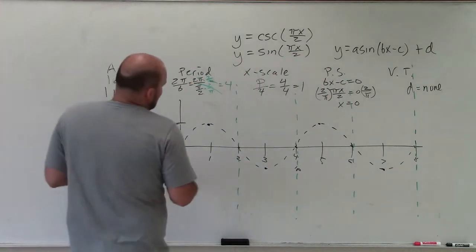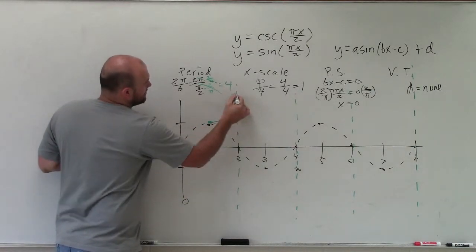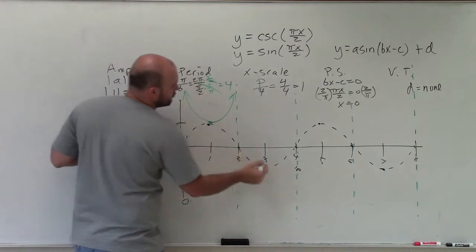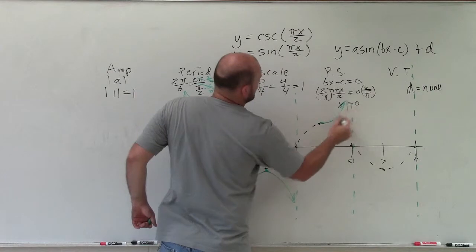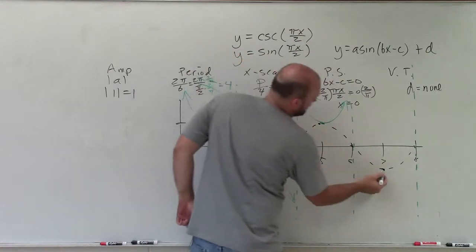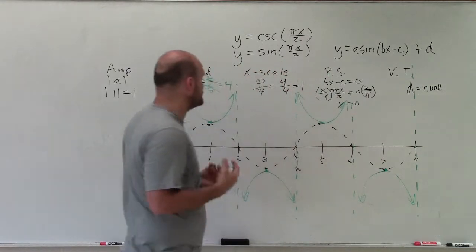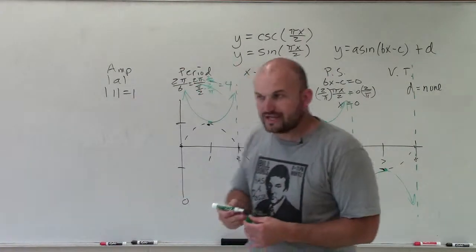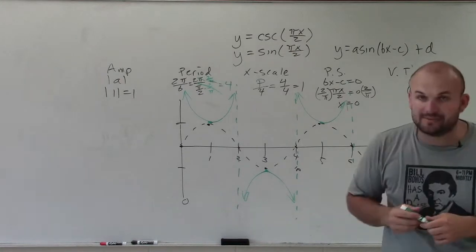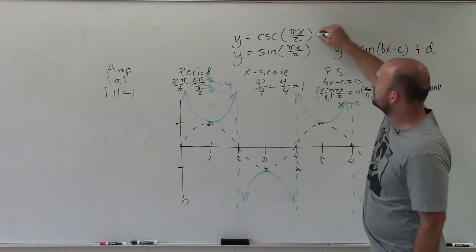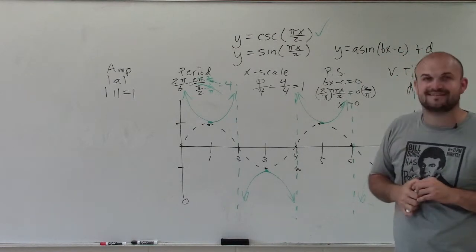To finish up the graph, cosecant actually shares a point with sine at the maximum and the minimum, but the cosecant graphs approach each asymptote. You can obviously use a table of values to get a much better graph, but this video is just about getting a general understanding of the transformations and what they look like. And in the green, ladies and gentlemen, is our lovely graph for cosecant. Thanks.